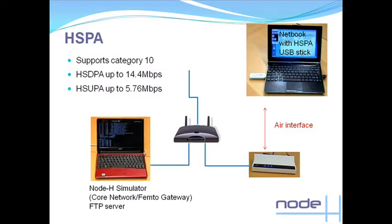In the demonstration, we'll start off showing a call. We'll then do an HSUPA at 5.76 Mbps — this is the highest speed that has been shown yet on a single-chip Femtocell. While the HSUPA transfer is running, we'll then run an HSDPA transfer.